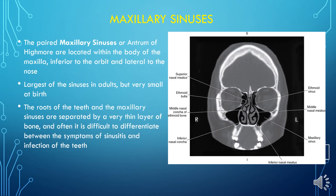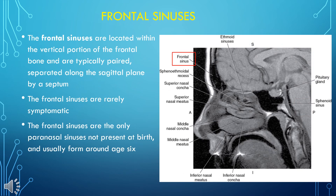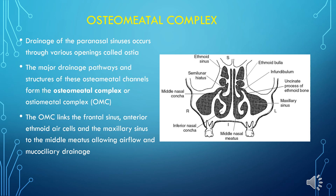We are almost done with this chapter — hang in there. The paired maxillary sinuses, or antrum of Highmore, are located within the body of the maxilla, inferior to the orbit and lateral to the nose. They are the largest sinuses in adults but very small at birth. The roots of the teeth and the maxillary sinuses are separated by a very thin layer of bone. The sphenoid sinuses are normally paired and occupy the body of the sphenoid bone just below the sella turcica. The frontal sinuses are located within the vertical portion of the frontal bone, typically paired and separated by a septum along the sagittal plane. The frontal sinuses are the only paranasal sinuses not present at birth, usually forming around age 6. Drainage of the paranasal sinuses occurs through various openings called ostia, forming the osteomeatal complex (OMC), which links the frontal sinus, anterior ethmoid air cells, and maxillary sinus to the middle meatus for airflow and mucociliary drainage.